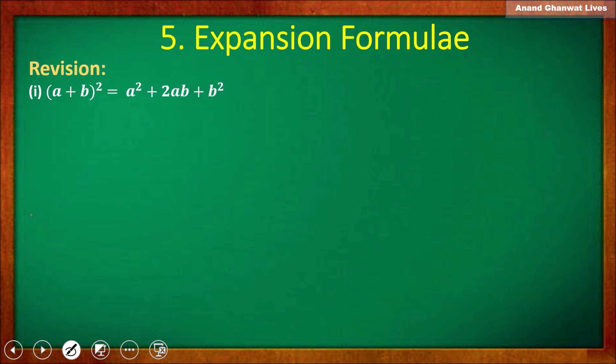Next we have learned the square of subtraction of two terms: (a − b)² = a² − 2ab + b².